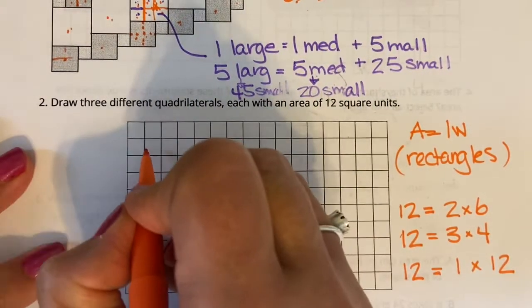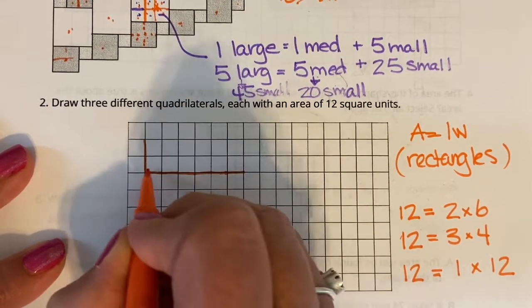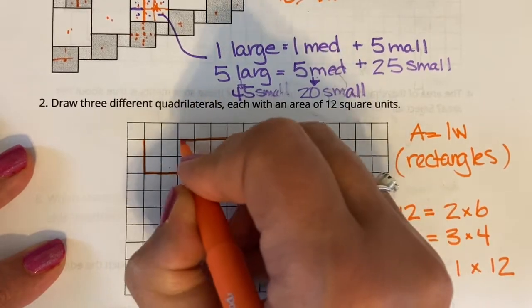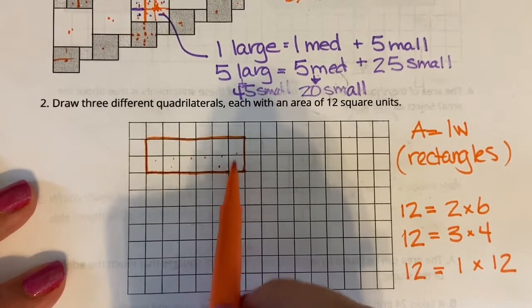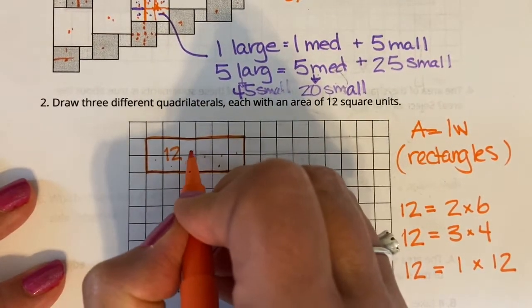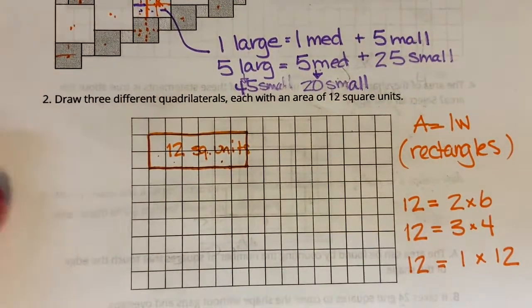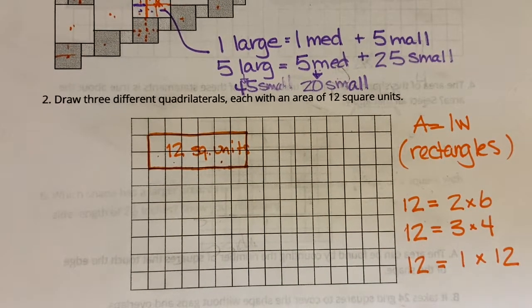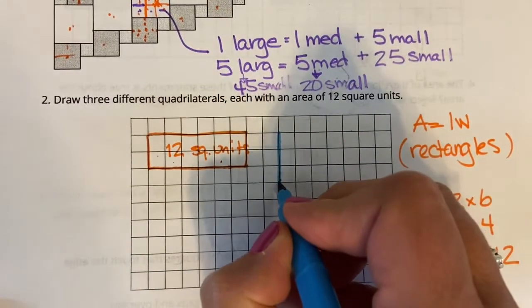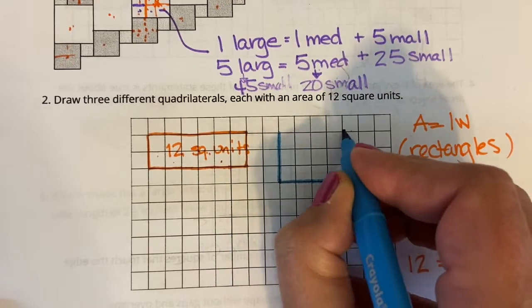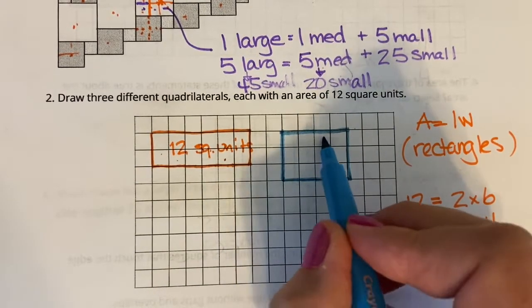Let's test it out. If I did 2 squares times 6 squares — counting them: 2, 4, 6, 8, 10, 12. Yes, that gives me 12 square units. What if I did 3 squares by 4 squares? All I did was look for two numbers that multiply to get 12. Counting them: 1 through 12 — yes, 3 by 4 gives me 12 square units as well.